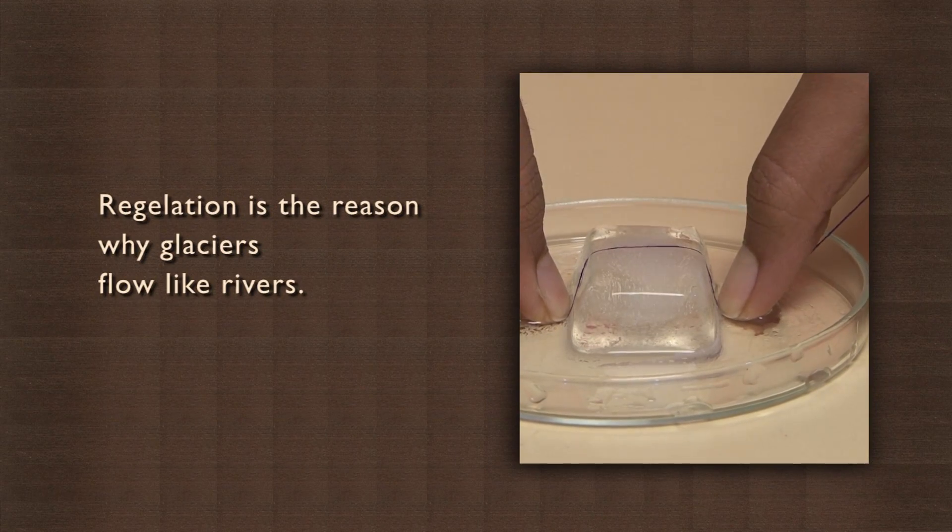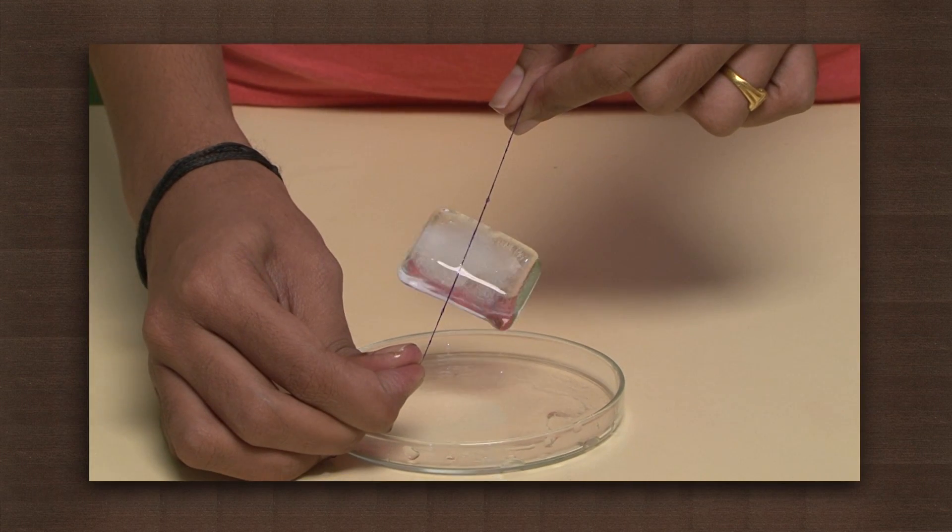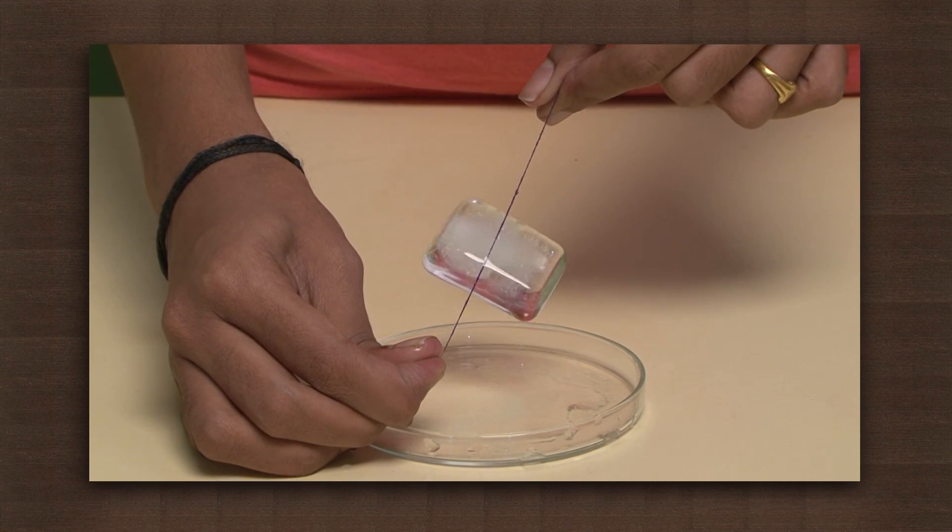Regelation is the reason why glaciers flow like rivers. The water at the base melts under pressure, allowing the glacier to slide ahead. And as it slides, the water moves to the sides of the glacier where the pressure is low and refreezes.